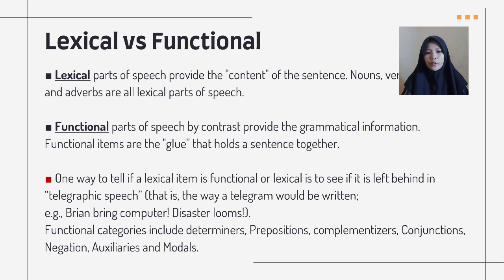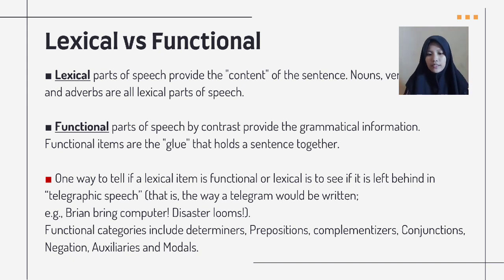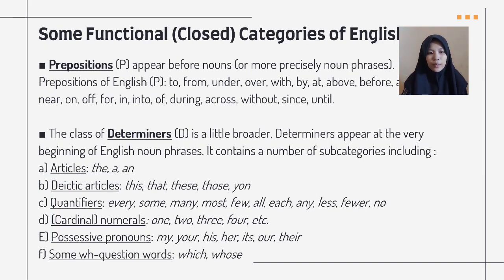Lexical versus functional. Lexical parts of speech provide the content of the sentence — nouns, verbs, adjectives, and adverbs are all lexical parts of speech. Functional parts of speech, by contrast, provide the grammatical information. Functional items are the glue that holds a sentence together. One way to tell if an item is functional or lexical is to see if it is left behind in telegraphic speech. Some functional categories of English: prepositions appear before nouns. Prepositions of English include: 'to,' 'from,' 'under,' 'over,' 'with,' 'by,' 'at,' 'above,' 'before,' 'after,' 'near,' 'on,' 'of,' 'for,' 'in,' 'into,' 'during,' 'across,' 'without,' 'since,' 'until.'